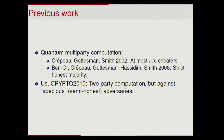Here's some related previous work. Quantum multi-party computation has been looked at for about 10 years now. Crepeau, Goddesman, and Smith in 2002 had a protocol that was secure as long as you had at most N over 6 cheaters. And then in 2008, they improved it to a strict honest majority. In the two-party computation case, we had a paper here two years ago that was basically the baby version I was talking about earlier — namely, two-party computation secure against what we called specious adversaries, which you can think of as semi-honest adversaries. We changed the name because defining semi-honest adversaries in the quantum case is a bit tricky, since an adversary can't just copy everything it sees because of the no-cloning theorem.